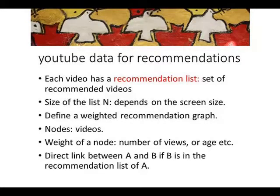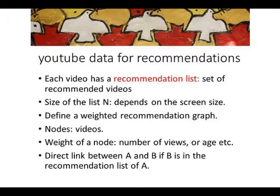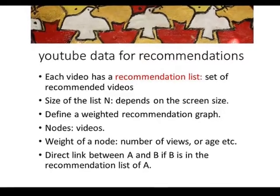We now define a weighted recommendation graph. The nodes in this graph are the videos on YouTube. A weight of a node is some number — for example, the number of views, the age of the node, the number of likes, or the number of dislikes. A directed link between A and B appears if B is in the recommendation list of video A.